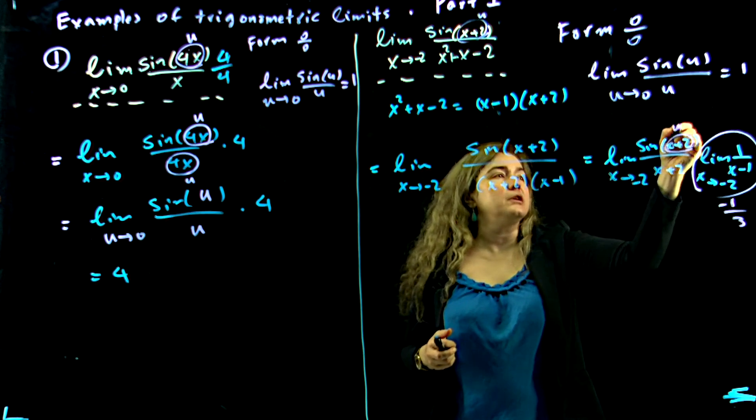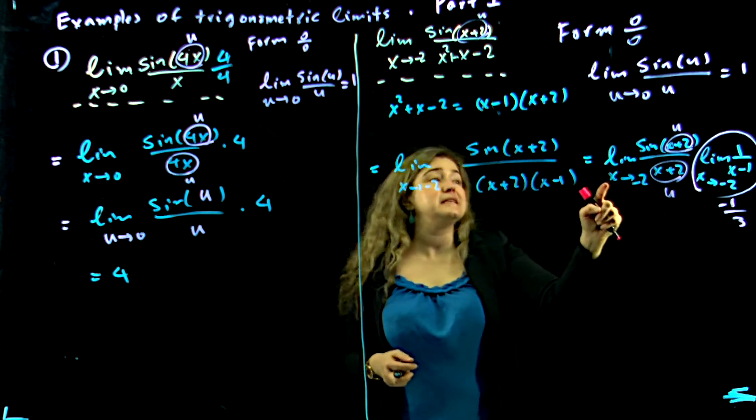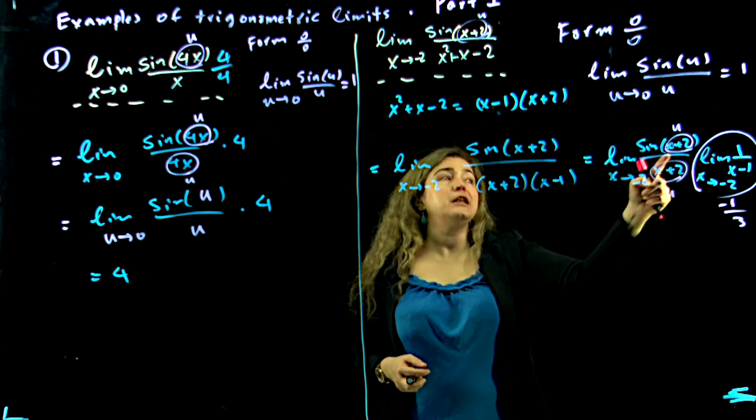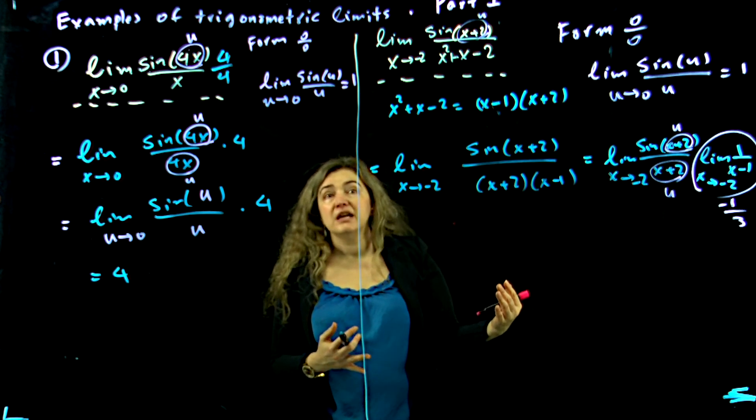This one, I can use that rule. Have that to be u. Then since x is approaching negative 2 and u is x plus 2, then u is approaching 0.